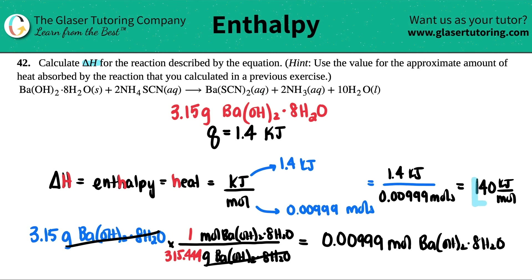And there you go. So calculate the delta H. 140 kilojoules will be absorbed because it's a positive for every one mole of the barium hydroxide octahydrate that is used in the reaction.